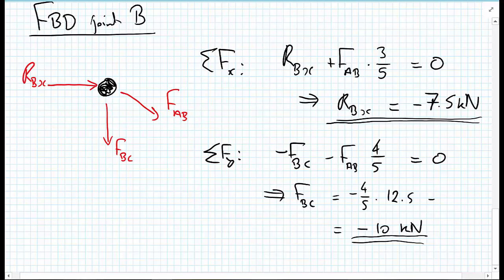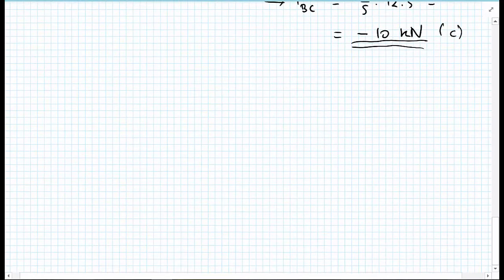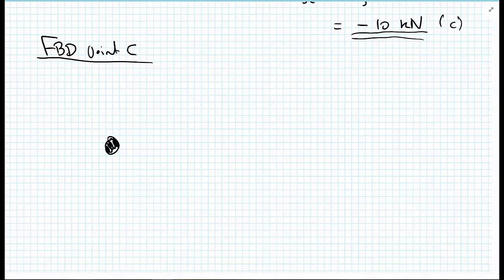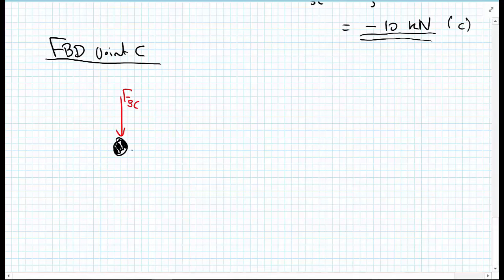Now we move to joint C. There are two ways to draw this free body diagram, especially now that we know the magnitudes and directions of FBC and FAC. Let's draw the joint and put the forces on: FBC is in compression and pushing towards joint C, and FAC is also in compression pushing towards the joint.